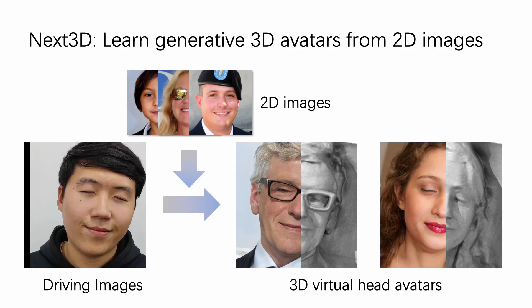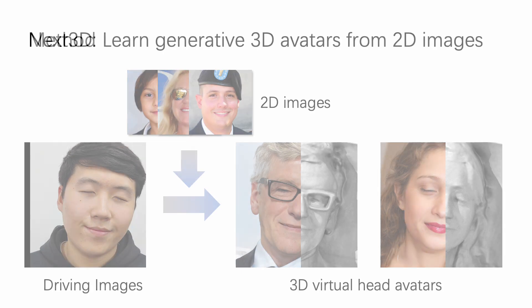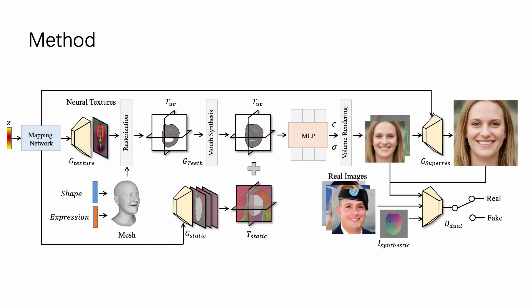We propose a novel 3D-GAN framework for unsupervised learning of generative, high-quality and 3D-consistent facial avatars from unstructured 2D images. To achieve both the accuracy of deformation and the flexibility of topology, we first utilized a 2D generative network to generate a high-quality neural texture. This texture is then projected onto three mutually orthogonal planes using face geometry templates through rasterization.